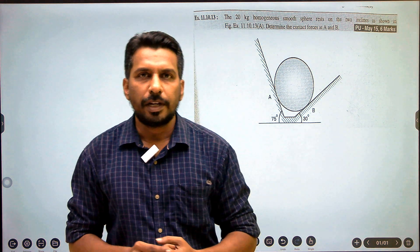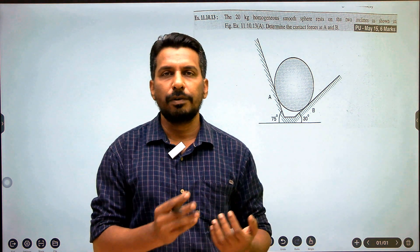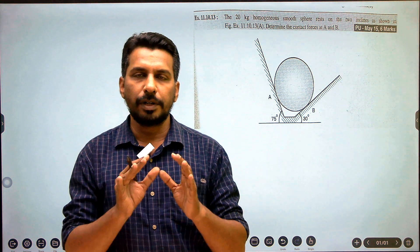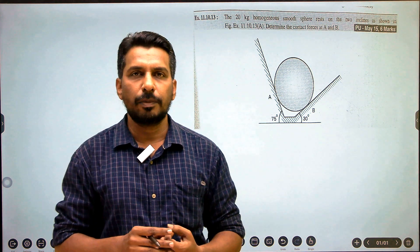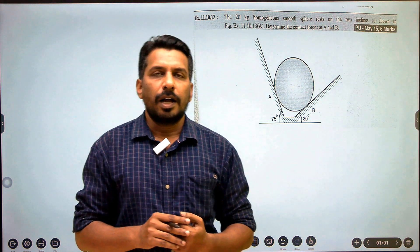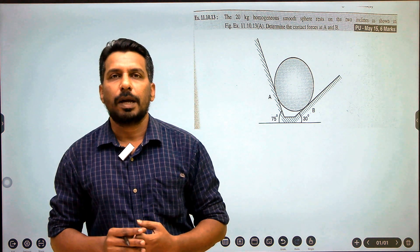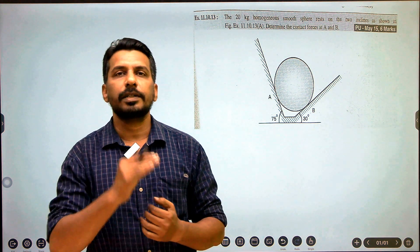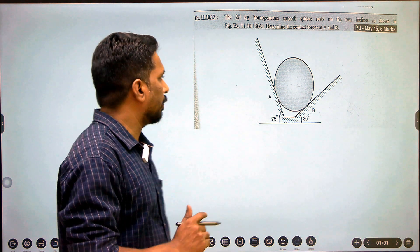Here is your second question. In the first question, we learned how to draw free body diagrams of circular, spherical, or cylindrical bodies and then apply Lamy's theorem. So we learned the application of Lamy's theorem in the case of cylindrical bodies. Now here is your second question.